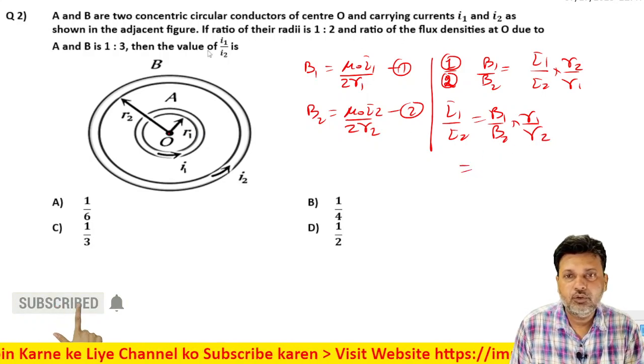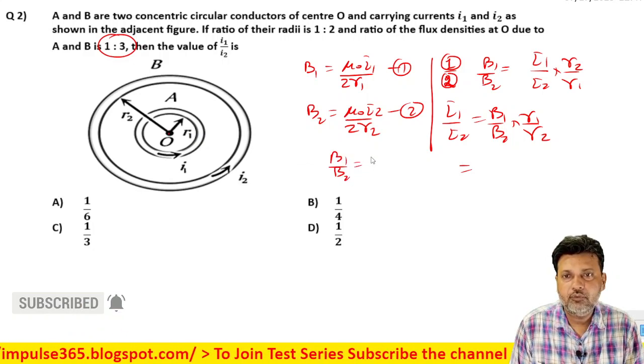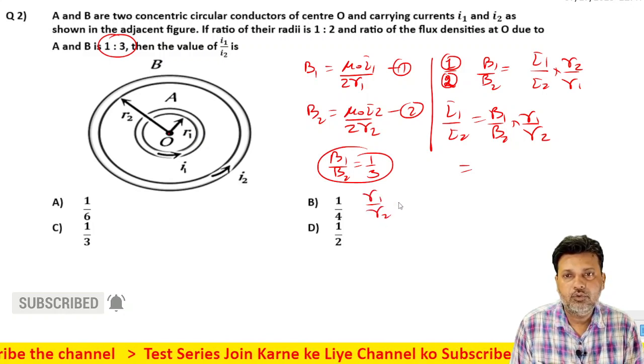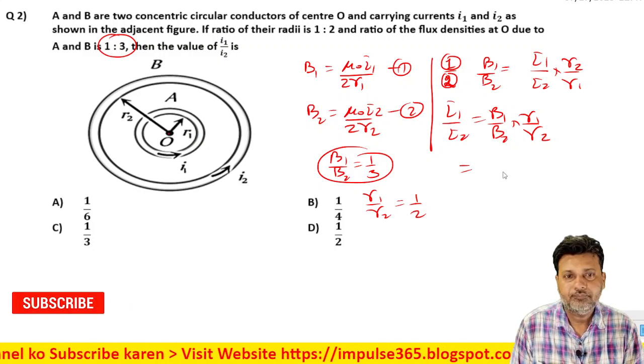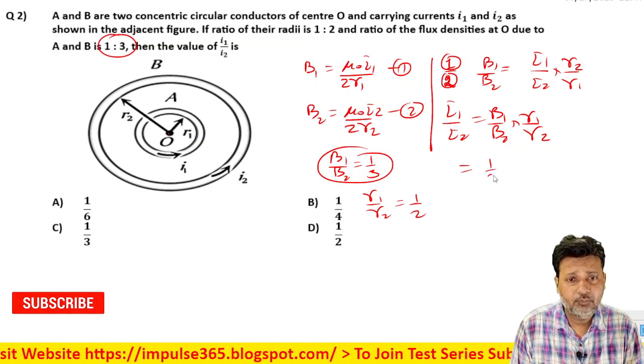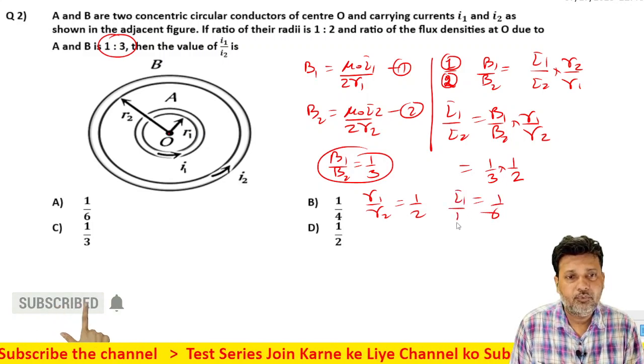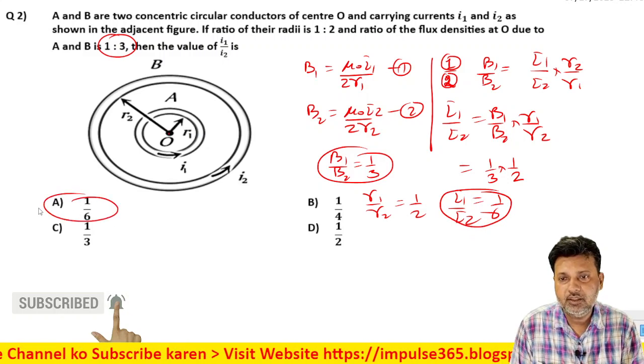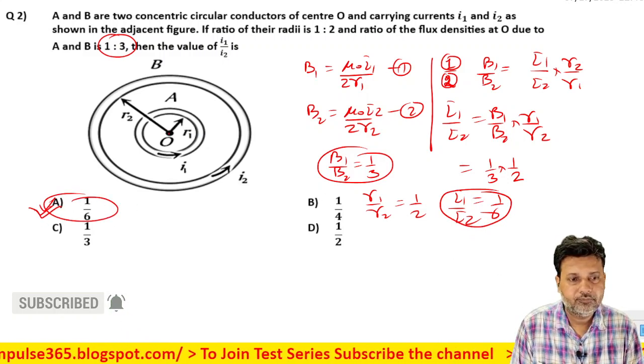Ab B1 upon B2 ki value kitni hai? Yah diya hua hai - question mein B1 upon B2 ki value diya hua hai, one by three. Aur r1 upon r2 ki value diya hua hai, one upon two. Correct hai. To kya ho jayega? One upon three into one upon two - one upon six. So i1 upon i2 is equal to one upon six aa raha hai.